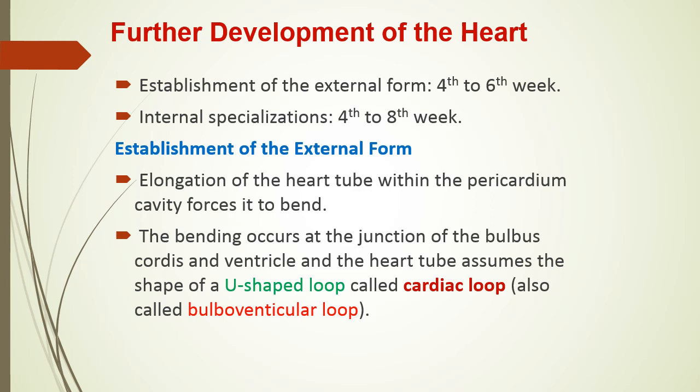The further development of the heart we will discuss under two main headings. The first is the establishment of the external shape of the heart — the external form — which occurs from four to six weeks. By the end of six weeks, the heart has taken at least its adult external shape.